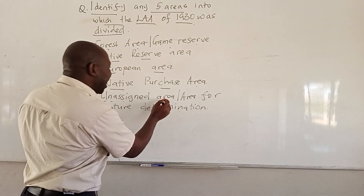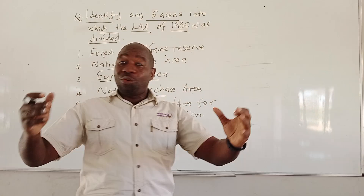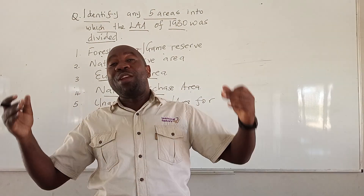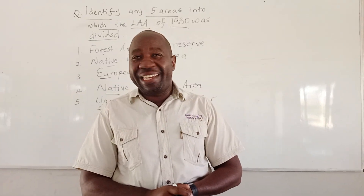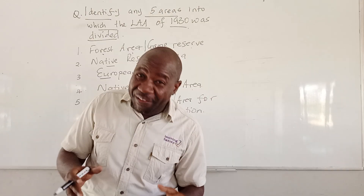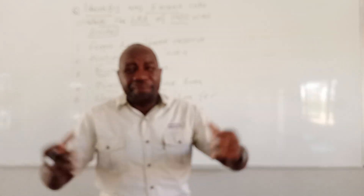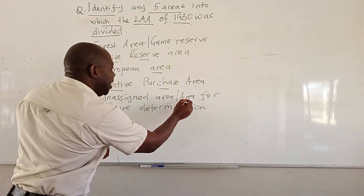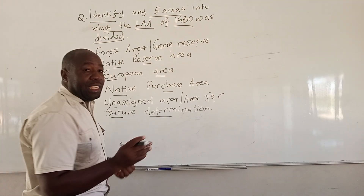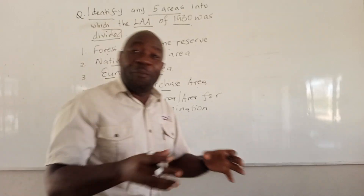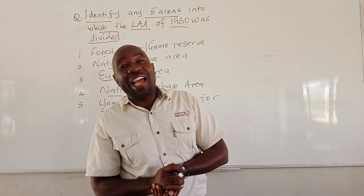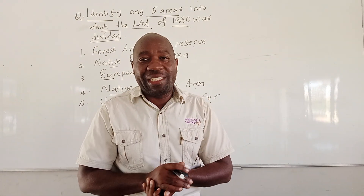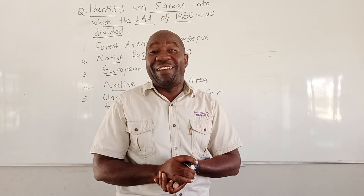We also had the Unassigned Areas — areas that were reserved for the unborn white children, specifically made for their children who were not yet born. We see how this land benefited the whites. It was meant to take as much land as possible from the country and give it to the whites. These were areas of future determination — they were going to be reserved and allocated to unborn white children. This is how the land was apportioned through the Land Apportionment Act of 1930.